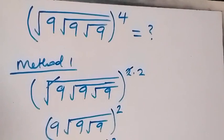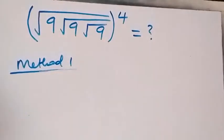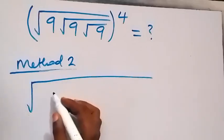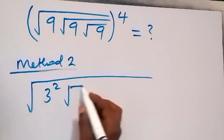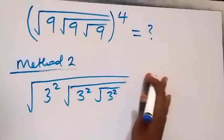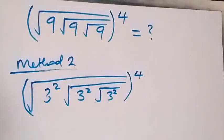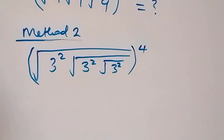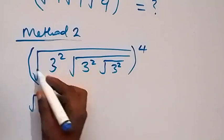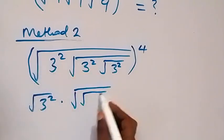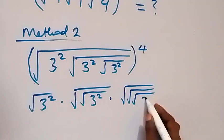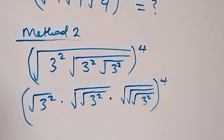We can rewrite it again for Method 2. We write square root of 3 squared, and also square root of 3 squared again, then square root of 3 squared again which is raised to power 4. In the next step when we separate and break it down, we have square root of 3 squared, times square root of square root of 3 squared, then square root of square root of square root of 3 squared, all raised to power 4.